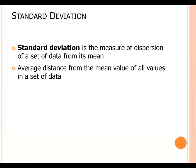Standard deviation is the measure of dispersion of a set of data from its mean. It measures the absolute variability of a distribution. Simply, we call it the average distance between the mean value and all values in a data set.